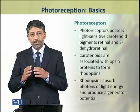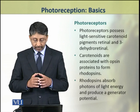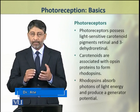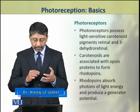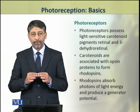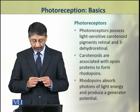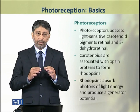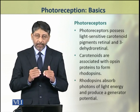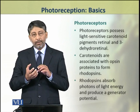The photoreceptors involved in photoreception possess light-sensitive carotenoid pigments: retinol and 3-dehydro retinol. These two pigments are found throughout the animal kingdom as photoreceptor molecules. These carotenoids are associated with opsin proteins and form rhodopsins.